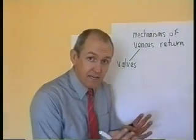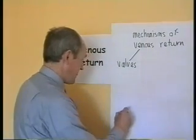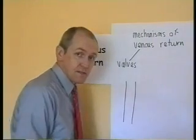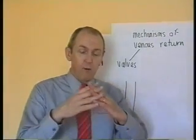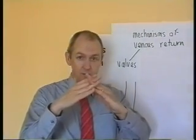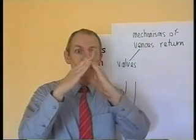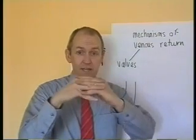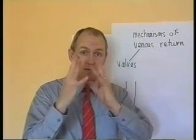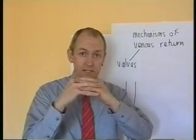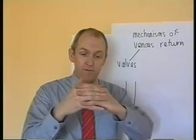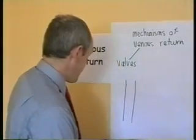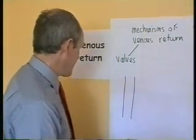If we think about a vein in the leg, for example, this might be the vein, and it contains valves. The valves point up the way — they will let blood go from underneath to on top. But when the blood tries to go from on top back down again, the valve stops it. So the valves in the veins will let blood go from the periphery to the centre, but not from the centre back to the periphery.